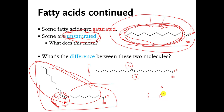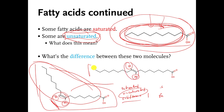We are done talking about fatty acids. You should know that they come in saturated and unsaturated types, that they can have cis and trans isomers if they are unsaturated with double bonds, that they have one tail, and that they have a carboxylic acid at one end of the tail.